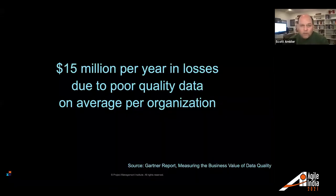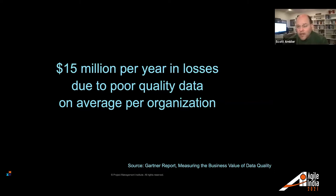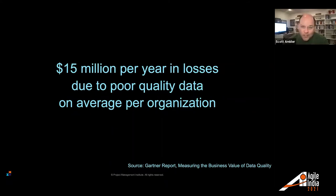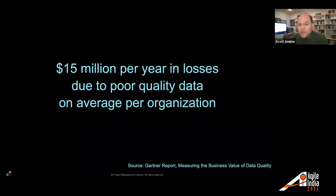Why should we care? Why is this important? Gartner has estimated that on average, the average organization loses $15 million per year. Smaller organizations probably have less of a loss; larger organizations probably have significantly greater loss. On average, $15 million per year per organization is lost due to poor quality data. So if you're an average organization, you're losing $15 million a year — it might be worth spending a couple of bucks trying to fix those problems.